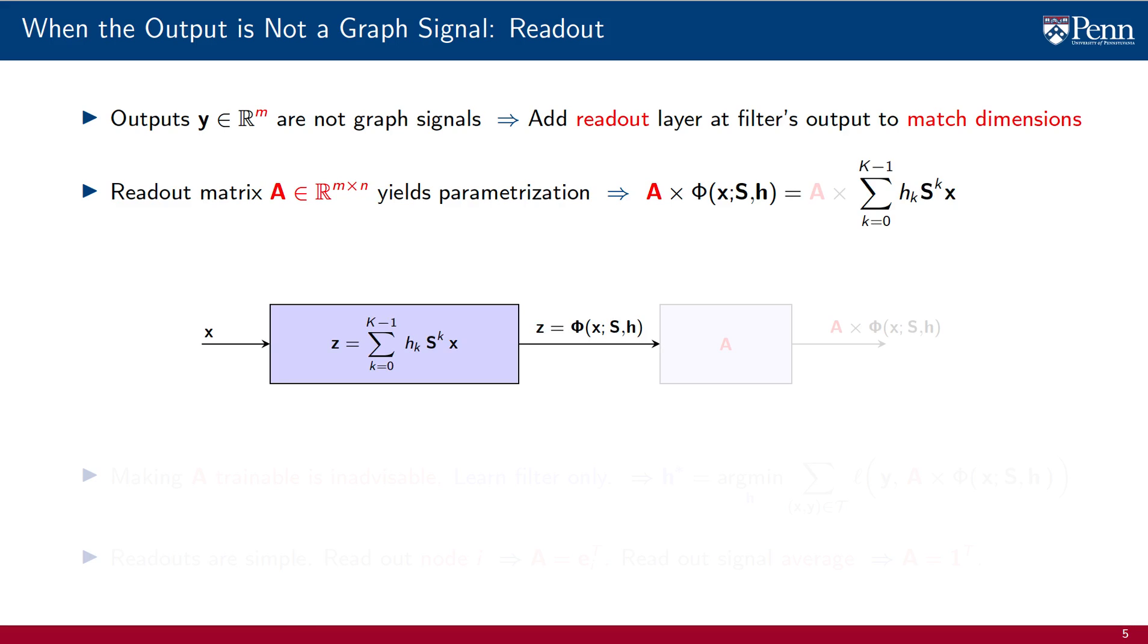Thus, we begin with the graph signal x, which we process with a graph filter to produce the signal z, which is also supported on S. We multiply this signal with A to produce output predictions as the product of A with the output of the graph filter.